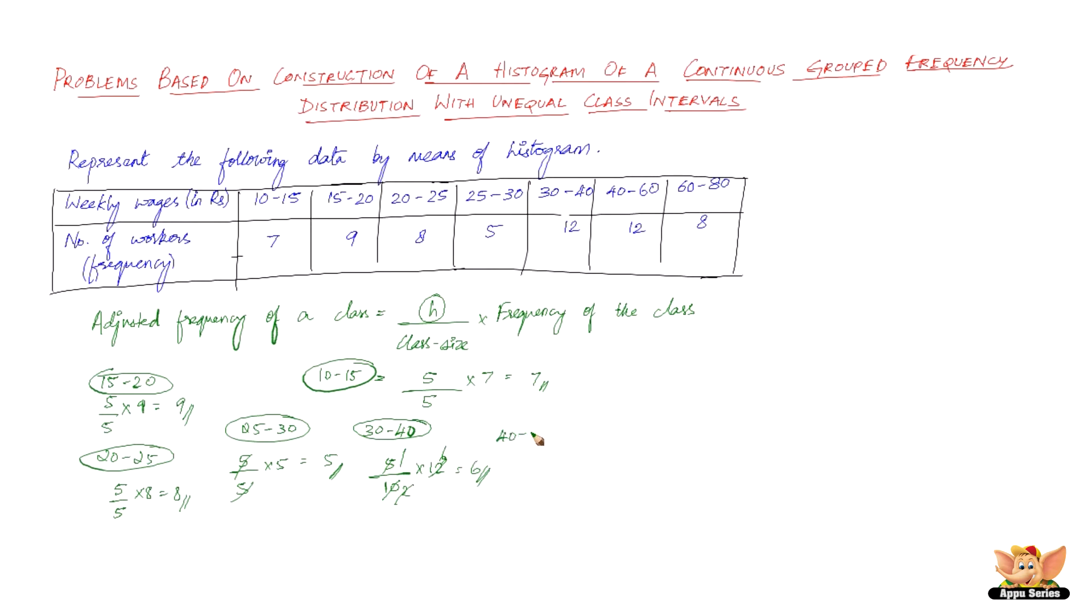And then we have 40 to 60. 40 to 60 is again the class size is 20. So we take 5 by 20 into 12. So we have 5 goes 4 times into 20. 4 goes 3 times into 12. So we have 3 here.